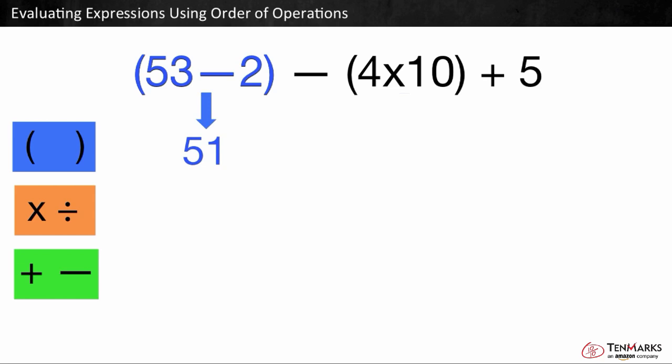Next, let's take a look at 4 times 10, since it's also in parentheses. 4 times 10 is 40. Now our simplified expression looks like this. 51 minus 40 plus 5.